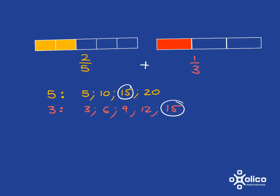I then go and rewrite two-fifths as an equivalent fraction with that common denominator of fifteen. How do I get from five to fifteen? I multiplied by three. If I do that to the denominator, I must do the same to the numerator. So two-fifths is equal to six-fifteenths.